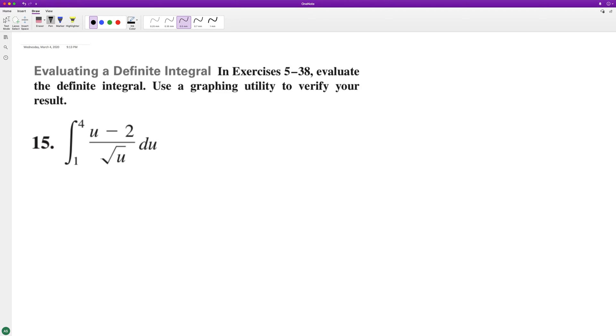Integral of the following. So we'll rewrite this one to four. Dividing through by the square root, we get U raised to the one half minus two U raised to the negative one half.